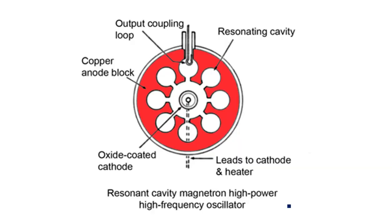Looking at the magnetron oscillator diagram, the construction includes an output coupling loop. The oscillations generated inside are collected from this coaxial cable inserted here. There are eight different types of resonant cavities connected together to produce the oscillations. The resonant cavities oscillate the signal at one particular frequency with multiple oscillations, so the signal oscillates within these cavities multiple times.